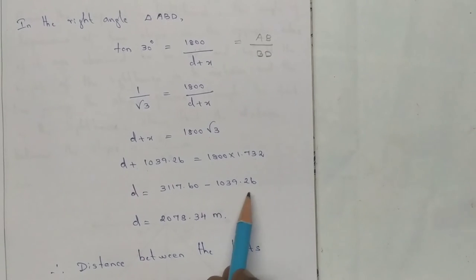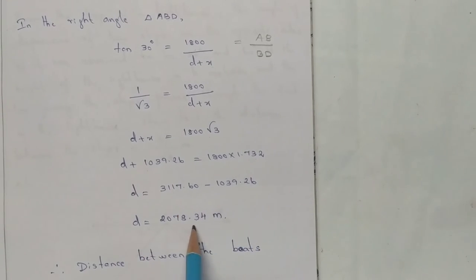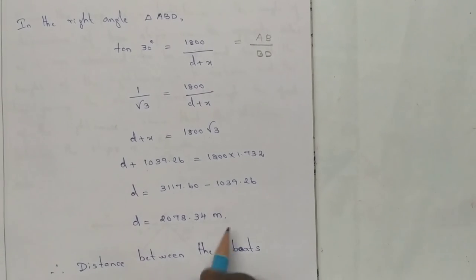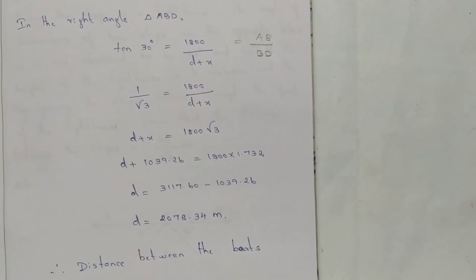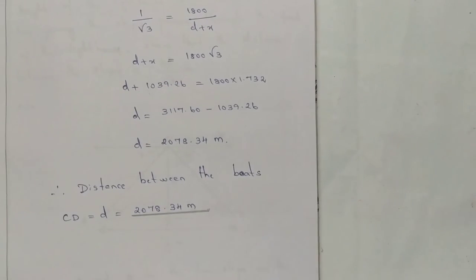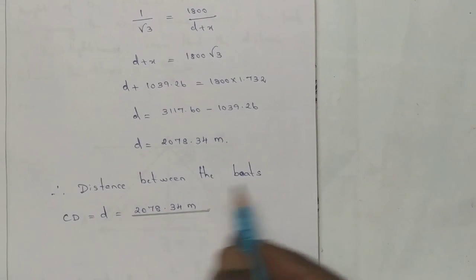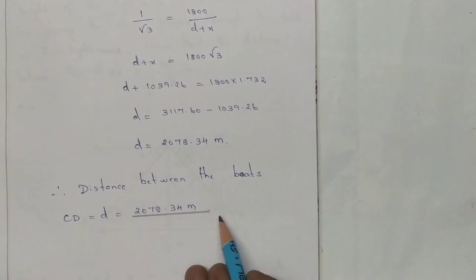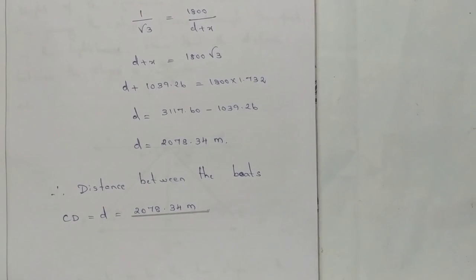So d equals 3117.60 minus 1039.26. Therefore, the distance between the boats, CD equals 2078.34 meters.